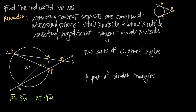Similarly, if we have a tangent line and a secant line that intersect one another outside the circle, we take the length of the tangent line segment — for example, AB — and square it. That squared value equals the product of the length of the secant segment inside the circle and the length of the secant segment outside the circle, such as UT times TW.